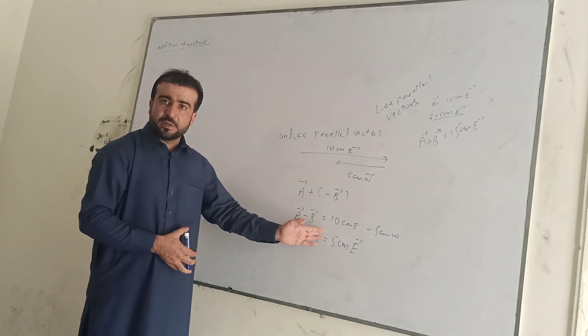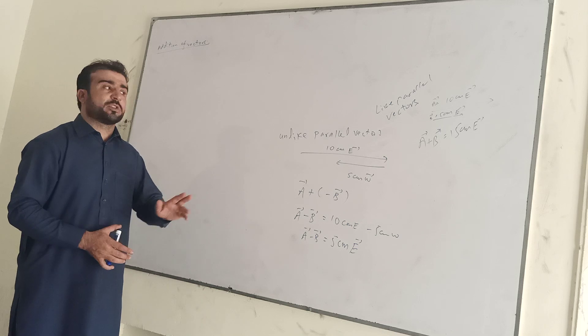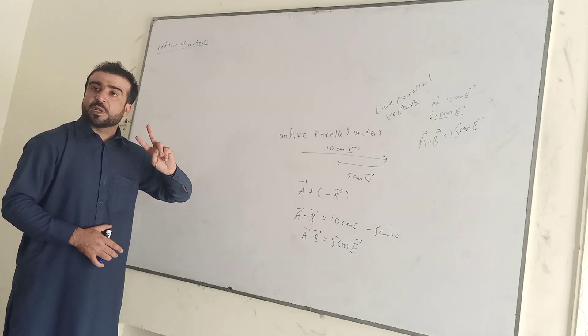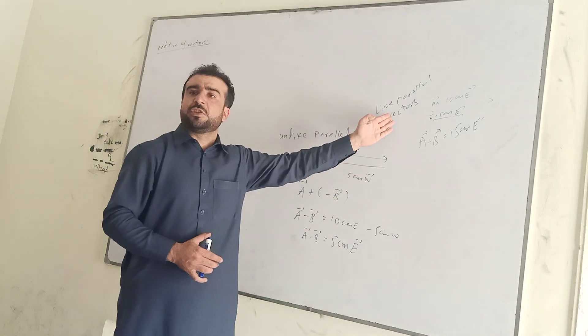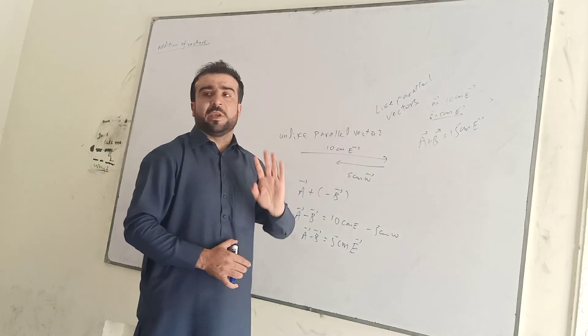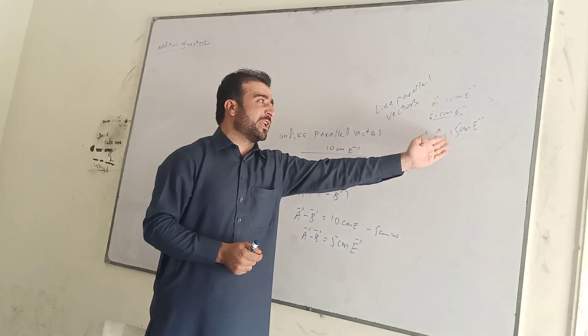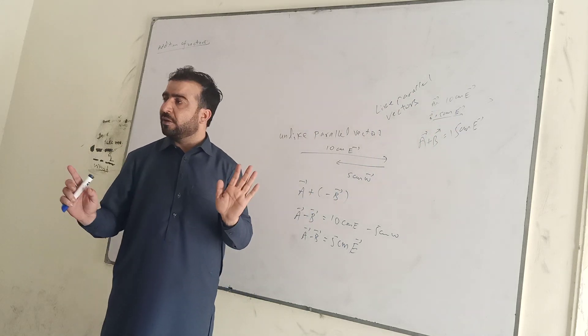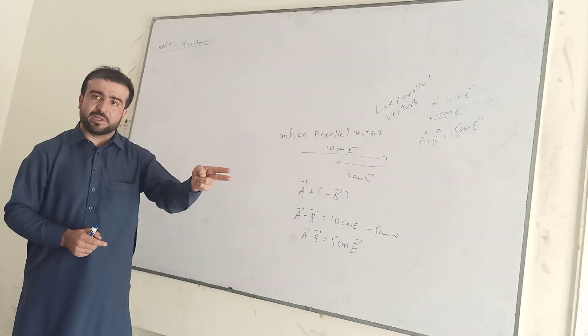The resultant direction of vectors - like parallel vectors are in the same direction. The value plus the value of direction same, results in 10 plus 5 is 15. The result direction is east.